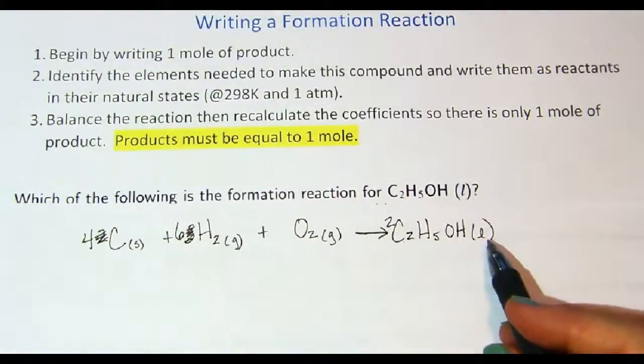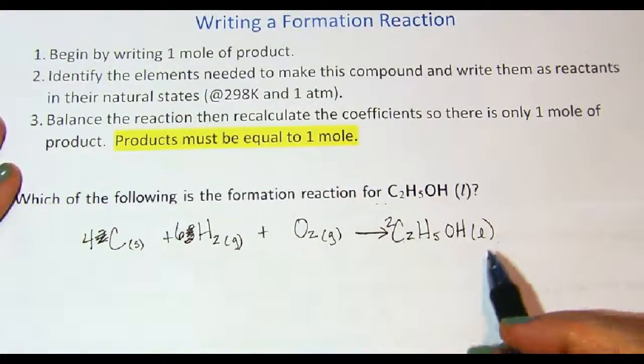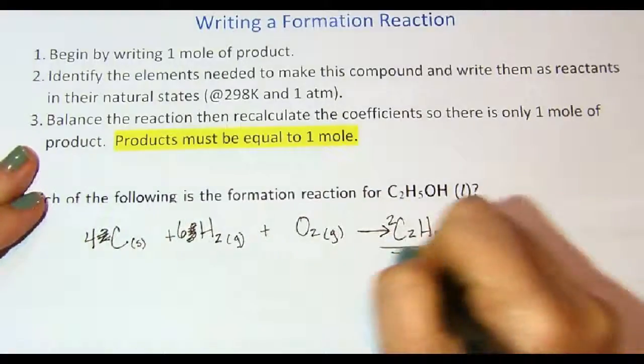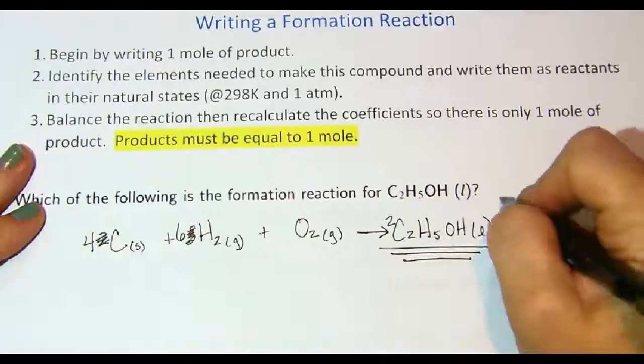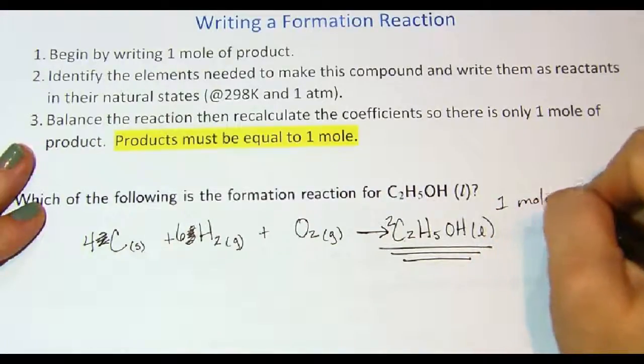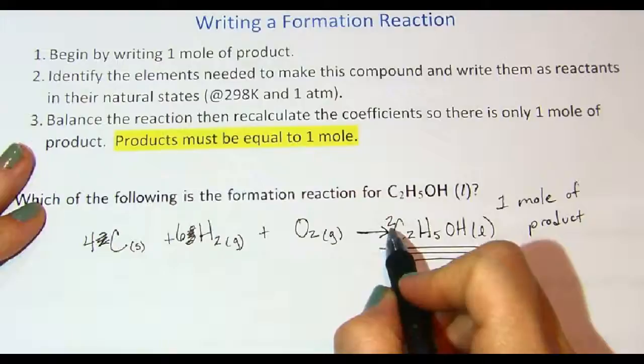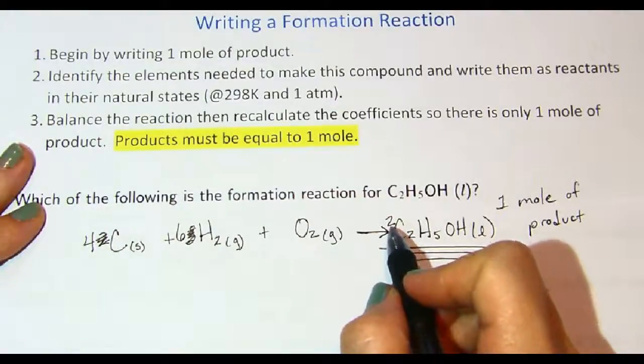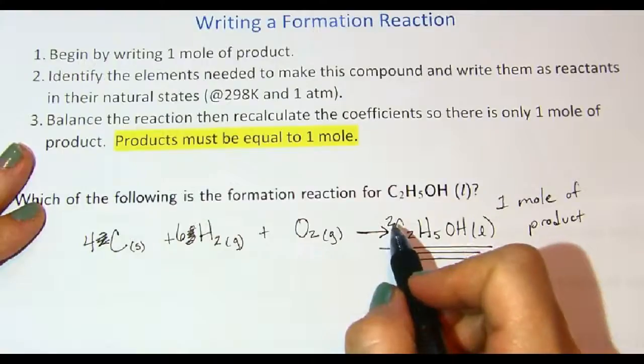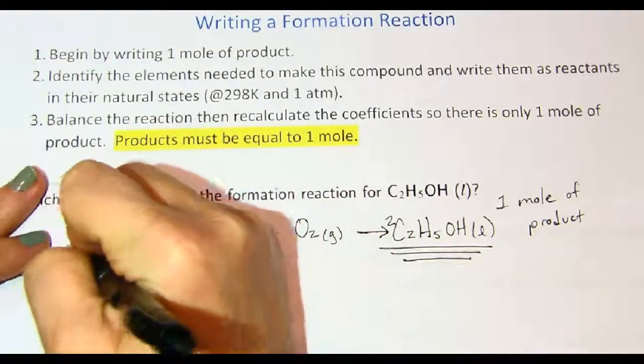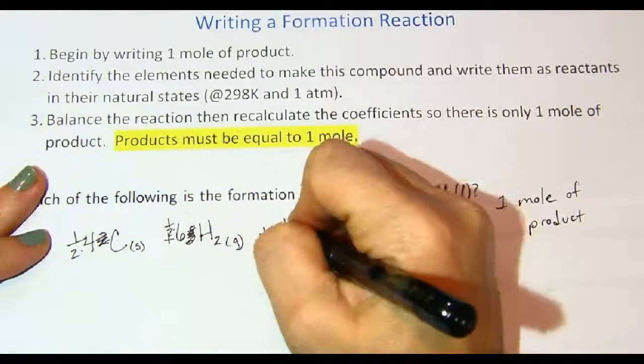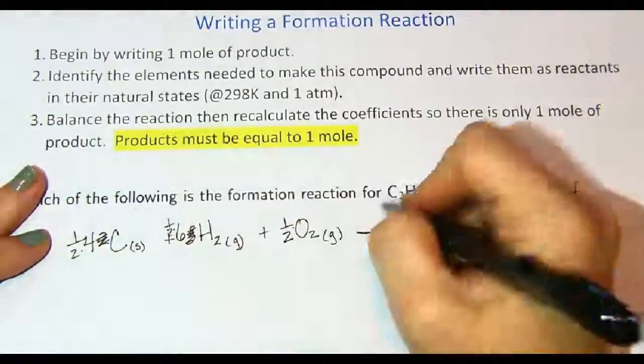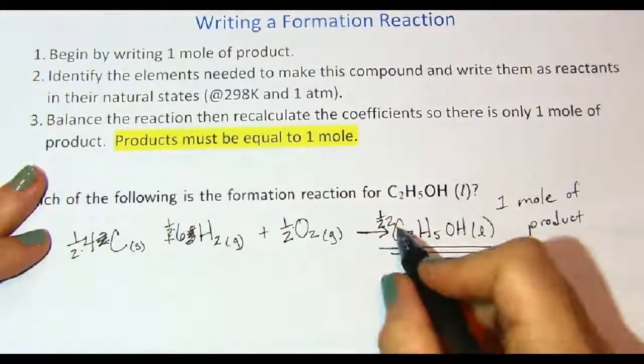Now we have a balanced equation, but we need to make sure our product has a coefficient of one. There should only be one mole of product. In order for this to be one, divide everything by two or multiply the entire equation by one half.